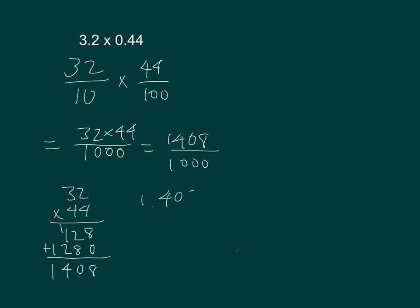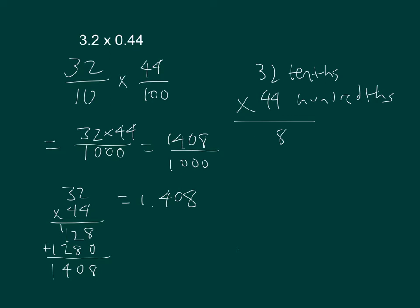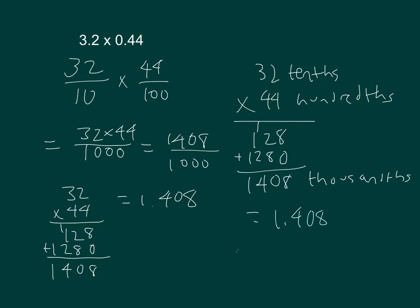That's equal to 1.408. I can also solve this in unit form. That's 32 tenths times 44 hundredths. 4 times 4 is 16, 4 times 3 is 12, add them together, giving 1,408 thousandths, which equals 1.408.